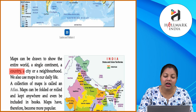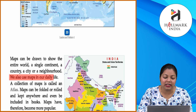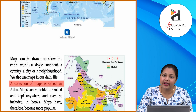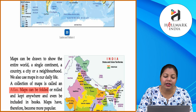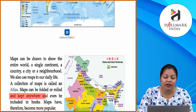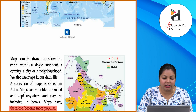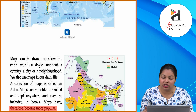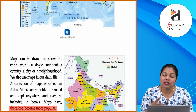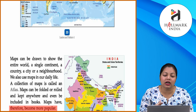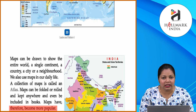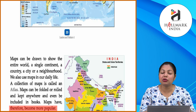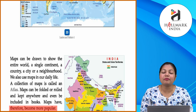We also use maps in our daily life. A collection of maps is called an atlas. Maps can be folded or rolled and kept anywhere and even included in books. Maps have therefore become more popular. Jo collection hoti hai maps ka, use hum atlas bolte hain. Aur maps ko aap easily roll karke kahin pe bhi rakh sakte hain ya carry bhi kar sakte hain.